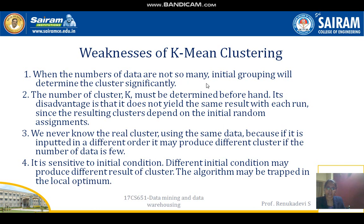The weaknesses of K-means clustering include: when the number of data points is small, the initial grouping will significantly determine the final clusters. The number of clusters K must be determined beforehand. A disadvantage is that it does not yield the same result with each run, since the resulting clusters depend on the initial random assignments. We may never find the real clusters using the same data if it is input in a different order. It may produce different clusters if the number of data points is few, and it is sensitive to initial conditions — different initial conditions may produce different results. The algorithm may also be trapped in a local optimum.